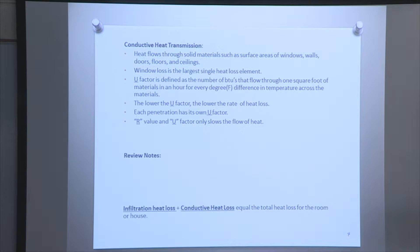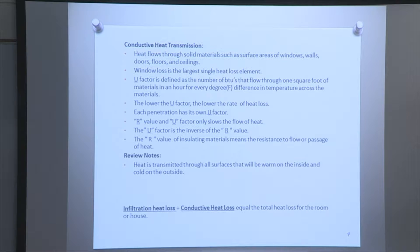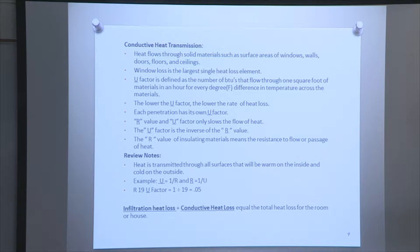R-values and U-values only slow the flow of heat. The U-factor is the inverse of the R-value. The R-value of insulated material means the resistance to the flow or passage of heat. Heat is transmitted through all surfaces that are warm on the inside and cold on the outside. For example: U equals 1 divided by R, and R equals 1 divided by U. R19 U-factor equals 1 divided by 19, giving a U-factor of 0.05. Total BTUs equals length times width times DDT times the U-factor. Infiltration heat loss plus conductive heat loss equals the total heat loss for the room or house.